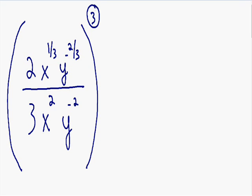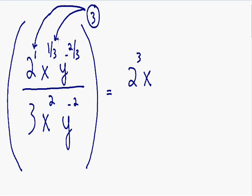The way we do this is very similar to the power rule. We need to take the exponent and multiply it by all of the exponents inside the parentheses. This exponent of 3 needs to be multiplied with the exponent on top of the 2 — you can assume there is a 1 exponent on top of the 2, so 1 times 3 equals 3. For the x term, 3 times 1 third is 3 over 3, which equals 1. For the y term, 3 times negative 2 thirds is negative 6 over 3, which equals negative 2.